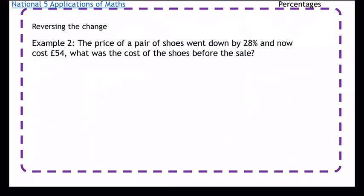Example 2: The price of a pair of shoes went down by 28% and now costs £54. What was the cost before the sale? So it's all about being before the sale - it already went down, it now costs £54. That's telling you there's been some sort of change. Look at the wording of the question: something's changed already. It is this now, what was it before?